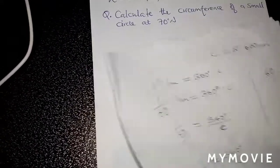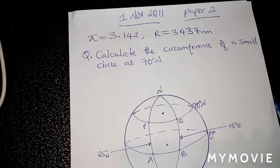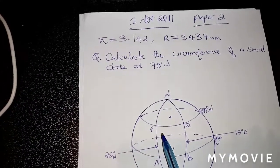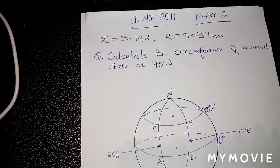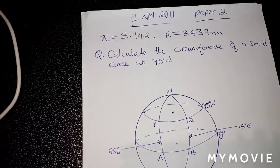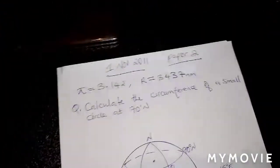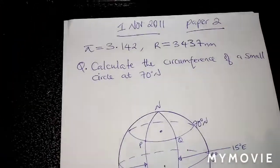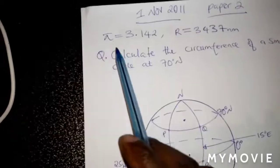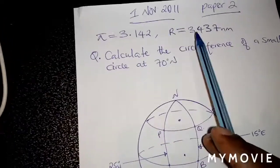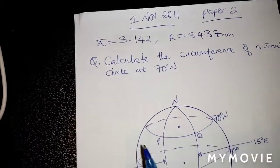The other way you can be asked to calculate circumference is this way. I have sampled a question from mathematics paper 2 on the 1st November 2011 — this is an internal examination, not a GCE paper, but for internal candidates. On this sample, we were given instructions to take pi as 3.142 and the radius to be 3,437 nautical miles.